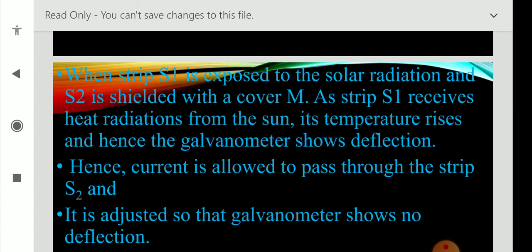As strip S1 receives heat radiation from the sun, its temperature rises and hence the galvanometer shows deflection. So S1 is exposed to the radiation, then its temperature rises, so we may observe some deflections in the galvanometer.